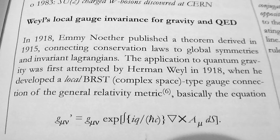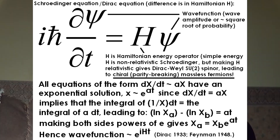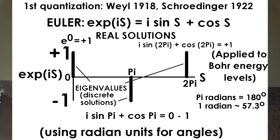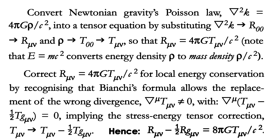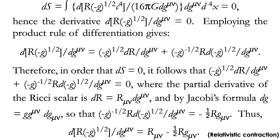In 1918, Hermann Weyl took Emmy Noether's theory relating symmetries to conservation principles and used it as a basis for constructing the first theory of quantum gravity. Energy is quantized.